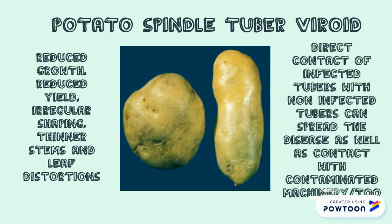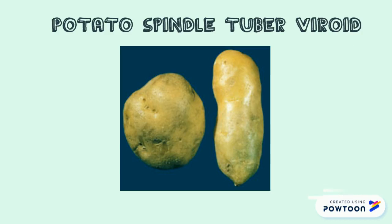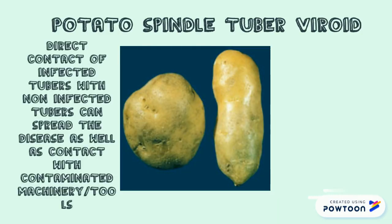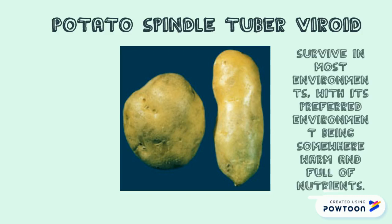Being a virus, it usually requires a host to live, but there have been several cases of PSTVD surviving outside of a host for around two years. This disease can spread across potatoes through contact with each other. Direct contact of infected tubers with non-infected tubers can spread the disease, as well as contact with contaminated machinery or tools. It can also spread through generations through infected tubers. This disease is a pain to deal with and can survive in most environments, with its preferred environment being somewhere warm and full of nutrients.